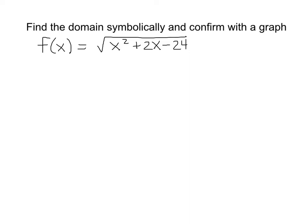In this video, we're going to find the domain symbolically of this radical function and confirm it with a graph. To begin with, whenever we have a radical function, we know that the radicand, what's underneath the radical, assuming it's an even root, must be greater than or equal to zero.